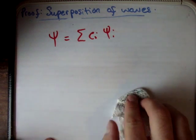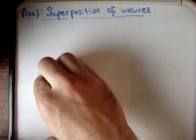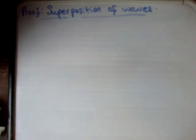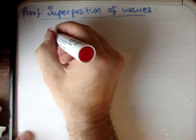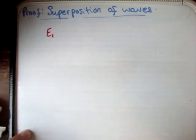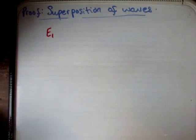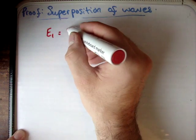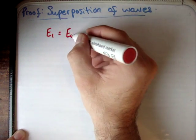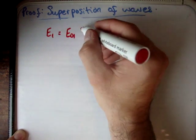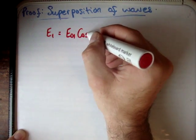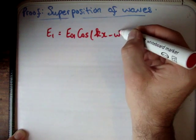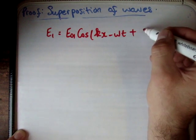The first thing we need to do is define what a wave is, or an electric field is. I'm going to say the first electric field, or the first wave, is equal to its initial amplitude E01, times a cosine of kx minus omega t plus epsilon.